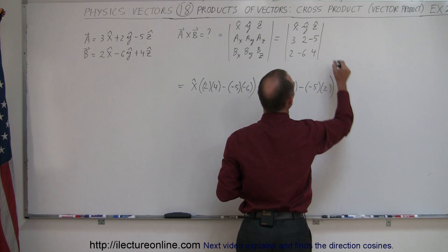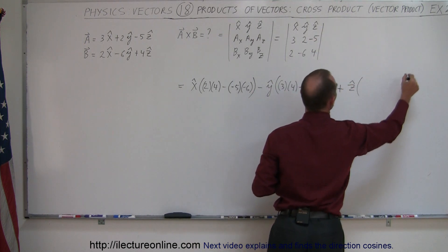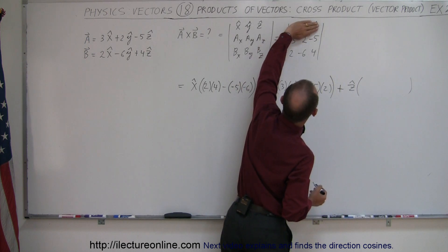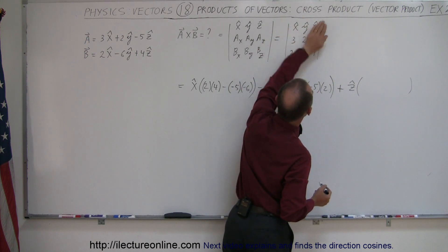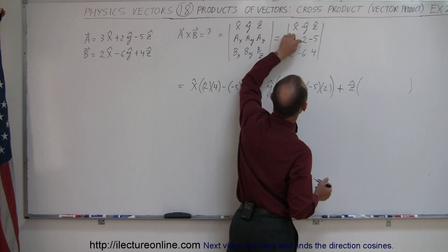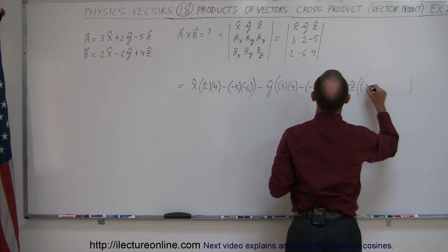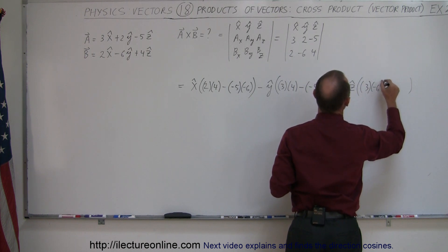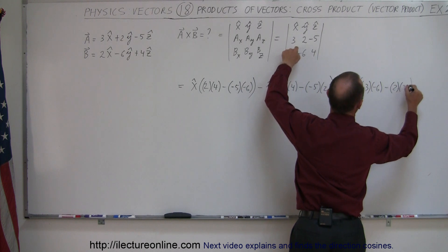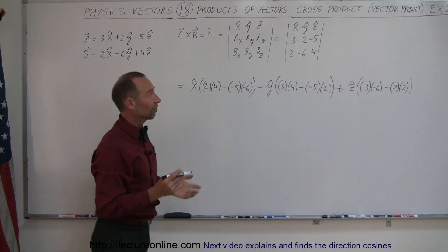And then plus the Z unit vector times its sub-matrix — we block out all elements in the row and the column that Z belongs to, and we're left with four numbers. We multiply this times this minus this times this, giving us three times negative six minus two times two.